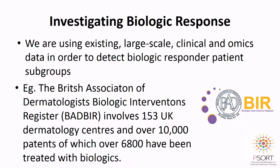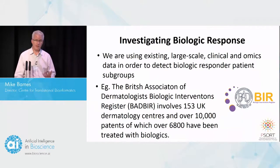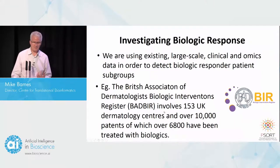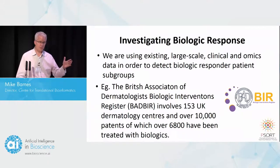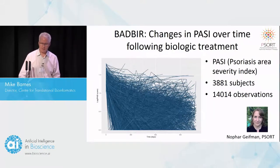Here's an example of how we're using AI across these projects. We're interested in biologic response — we need to define response to a biologic before we can correlate that with genomic markers. We have access to the British Association of Dermatologists Biologic Intervention Register, known as BADDBAR. This involves 153 dermatology centers and has 10,000 patients, including 6,800 patients treated with biologics. It links through to their electronic health record and has longitudinal follow-up — it's a really rich resource. Nophar Geifman at the University of Manchester in the SORT team has been doing work on this database.